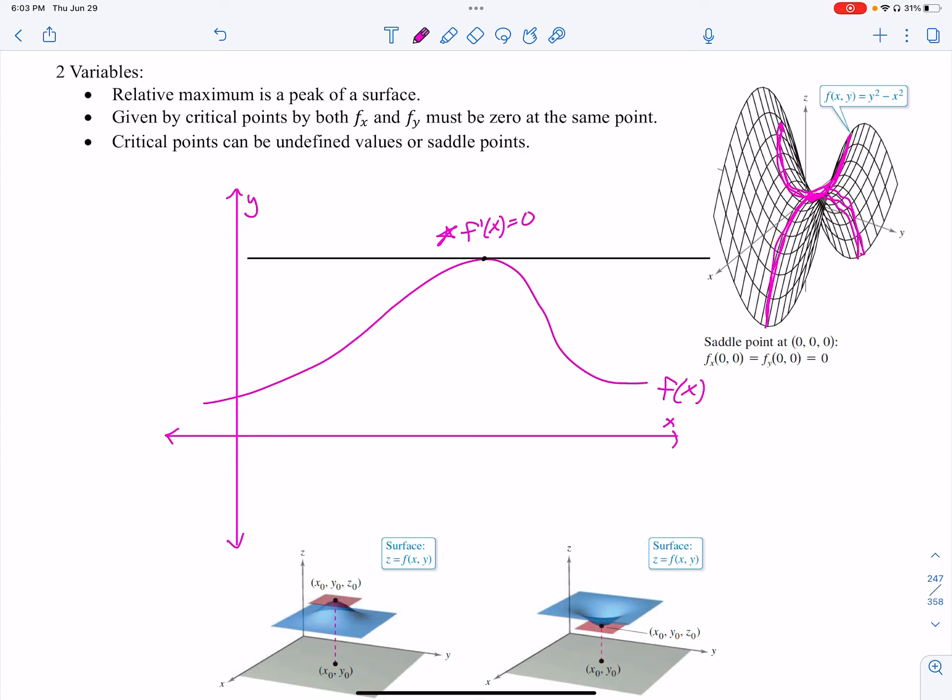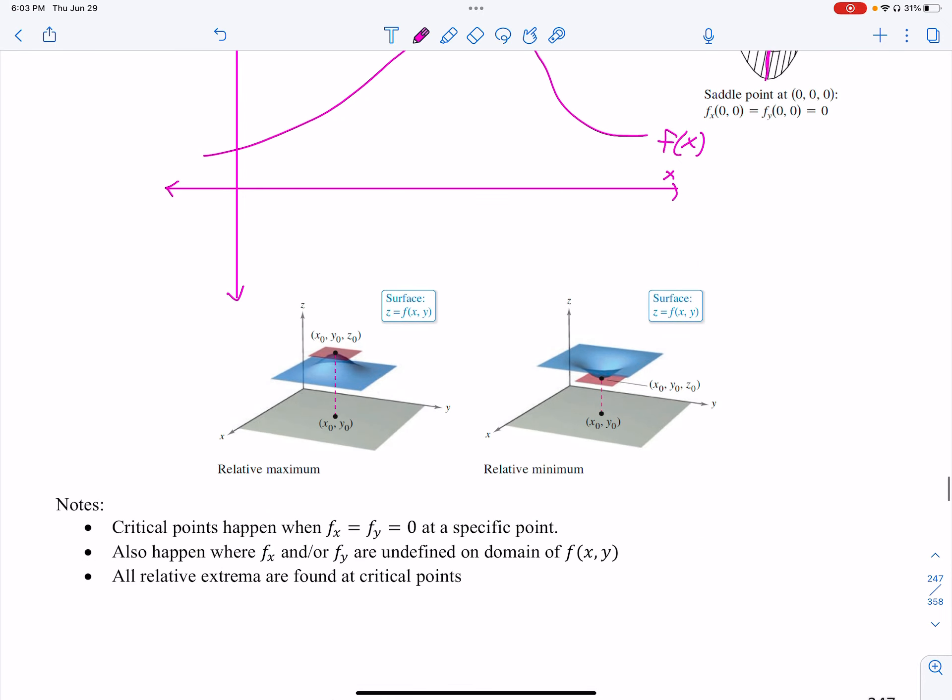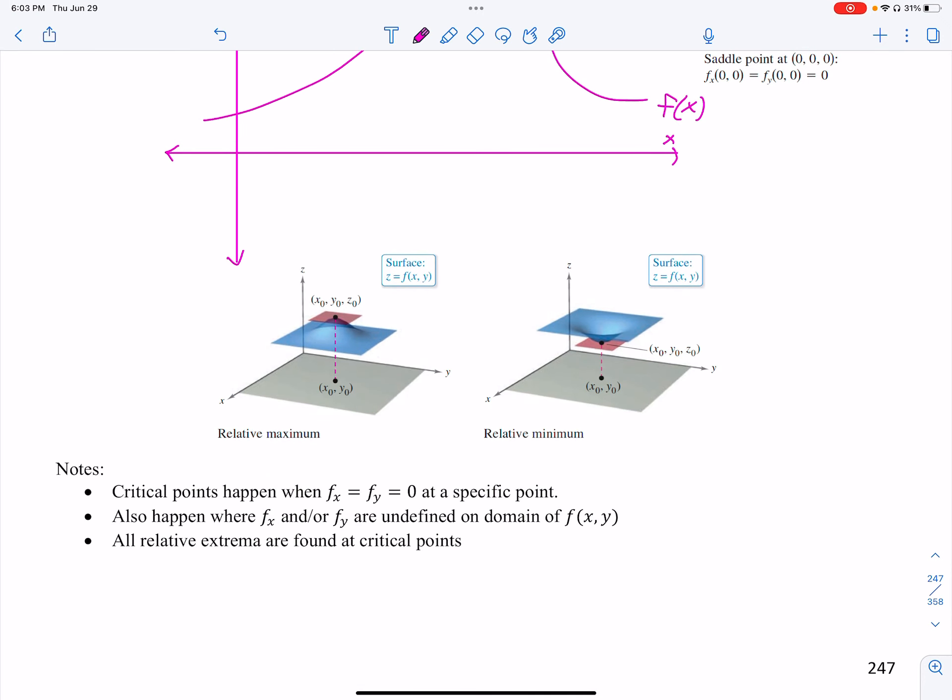The good thing about what I do like about this test, the critical points will be the more difficult part. And then we are actually going to use a test. Just like there was a second derivative test, we actually have a second partial test to help us determine if these critical points are nothing, an undefined point, or if it's a relative maximum or saddle point. So a couple of things before we move on. Critical points happen when the first partials are zero, or where they are undefined on the domain, and those relative extrema are found at those critical points.